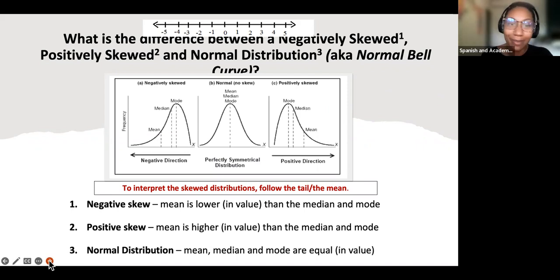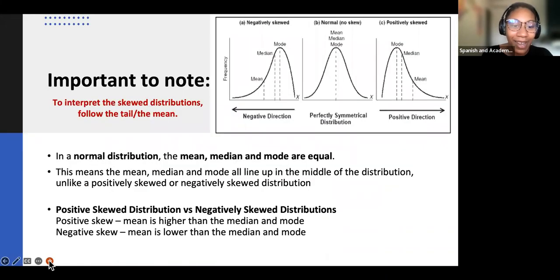In a negatively skewed, the mean is lower, and in a positively skewed, the mean is higher. In our normal distribution, the mean, median, and mode are all equal. This could be on your exam. That's why I'm pointing this out.